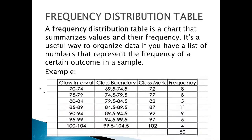A frequency distribution table is a chart that summarizes values and their frequency. It's a useful way to organize data if you have a list of numbers that represent the frequency of a certain outcome in a sample. In this example, the first column is the class interval. The numbers on the left are the lower limits and the numbers on the right are the upper limits. There are 7 class intervals or 7 groups in this example and each group has 5 numbers.